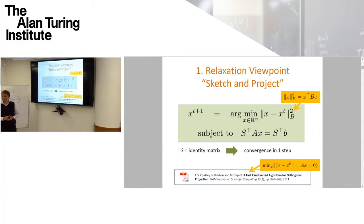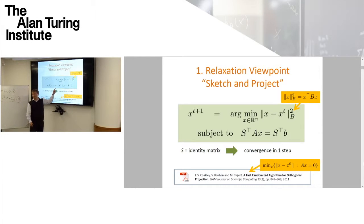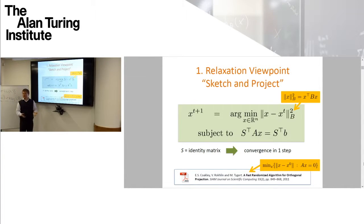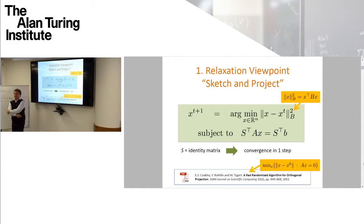[Audience: Just to clarify — at each step we are sampling S randomly?] Yes. At each step we take S randomly from a certain distribution that you decide on at the beginning. The distribution is essentially a parameter of your algorithm. The data scientist decides what distribution to draw from and just keeps drawing matrices from that distribution in an IID fashion, never changing the distribution.